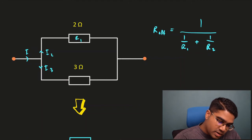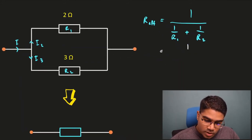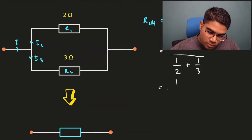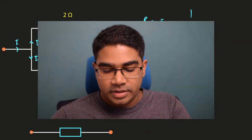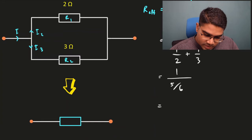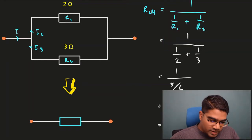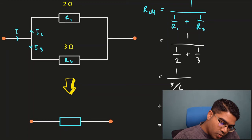Let's label these as R1 and R2. The calculation would be 1 over (1/2 + 1/3). When you work this out, this equals 1 over 5/6. When we have 1 divided by a fraction, the answer is just the reciprocal of that fraction. So 1 over 5/6 is simply 6/5, which equals 1.2 ohms. These two resistors combined give an effective resistance of 1.2 ohms.